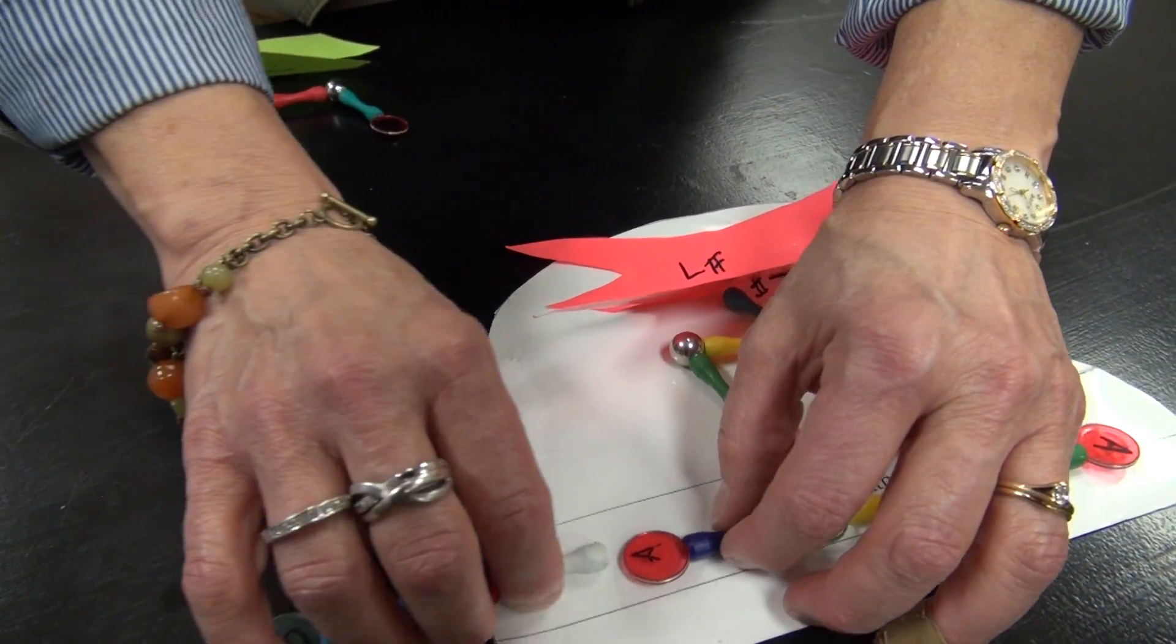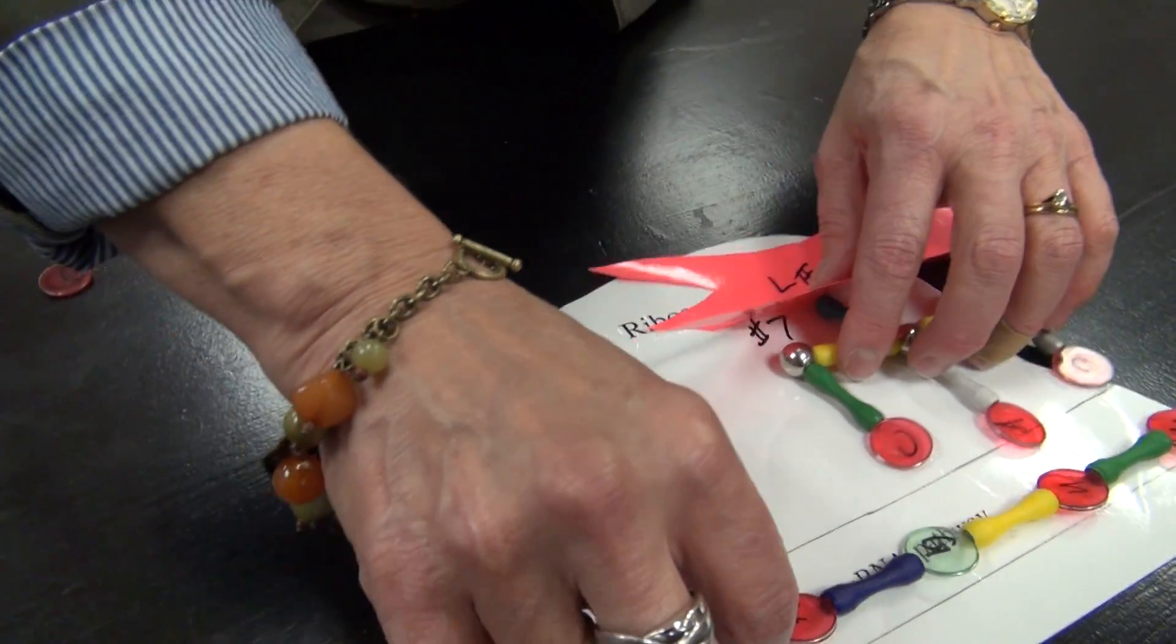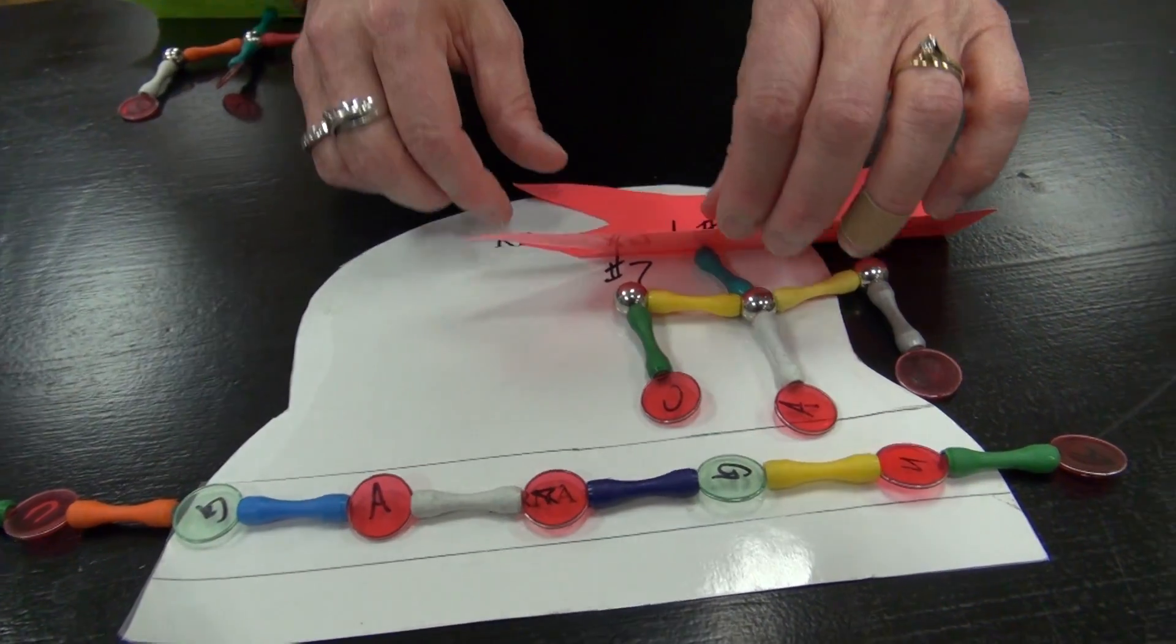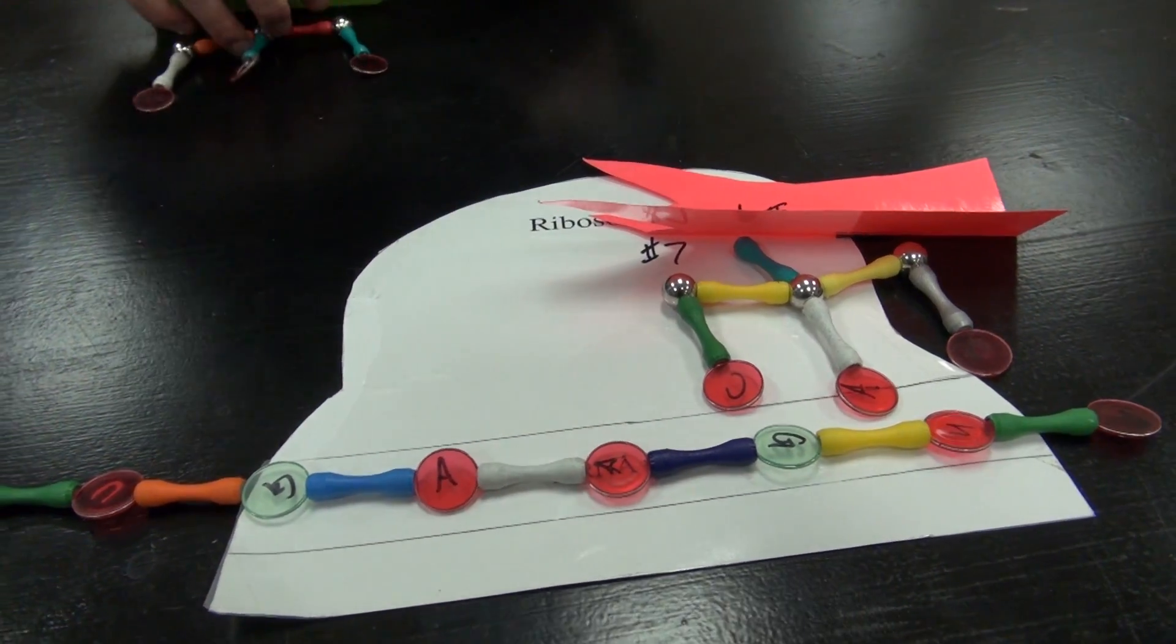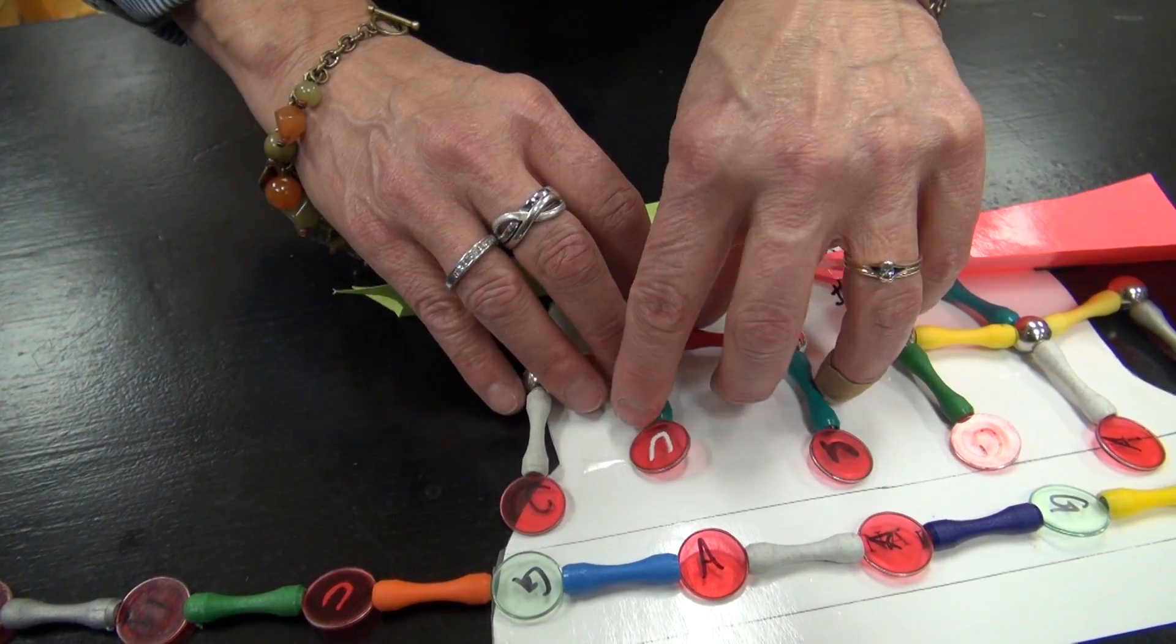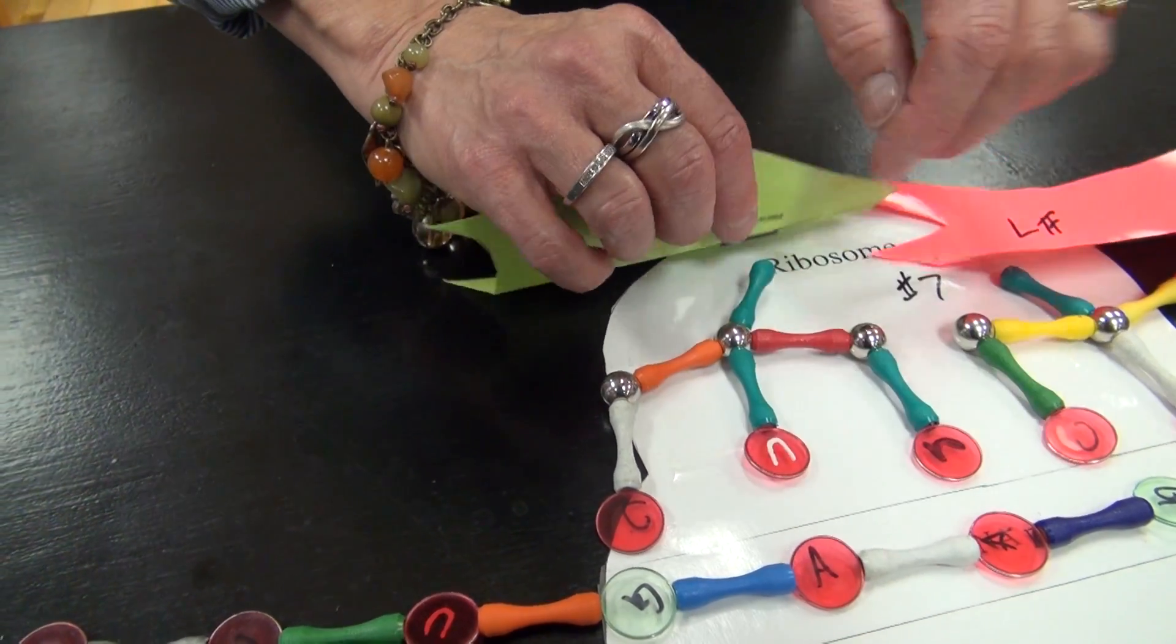The next set of codons is read, which brings the second tRNA that matches up with these codons. This is an anticodon.